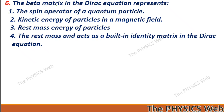Next: the beta matrix in the Dirac equation represents the rest mass and acts as a built-in identity matrix in the Dirac equation. So, four is your correct option.